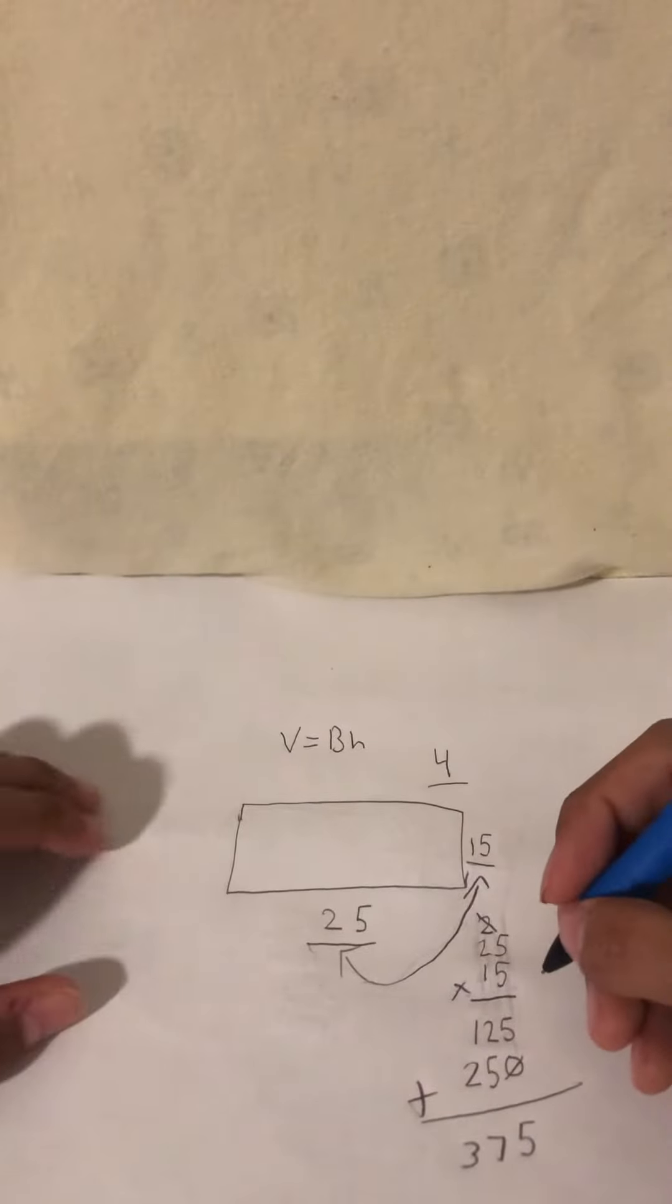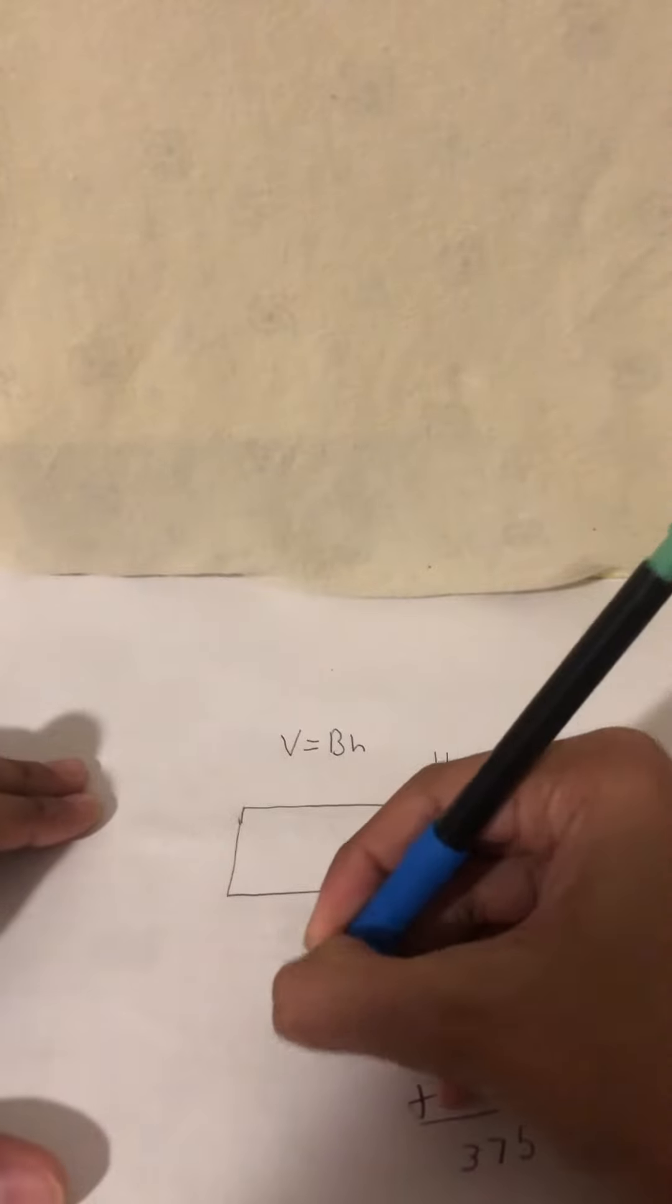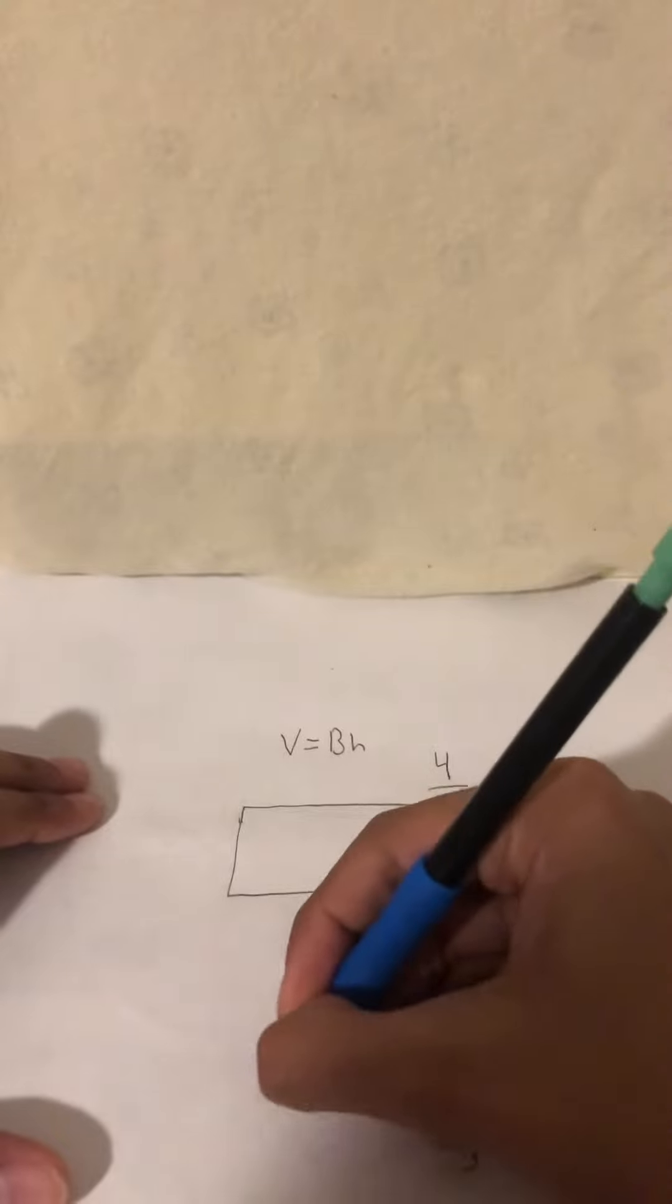Okay, so 375. And then after we get our number 375, we would bring in the height and multiply.